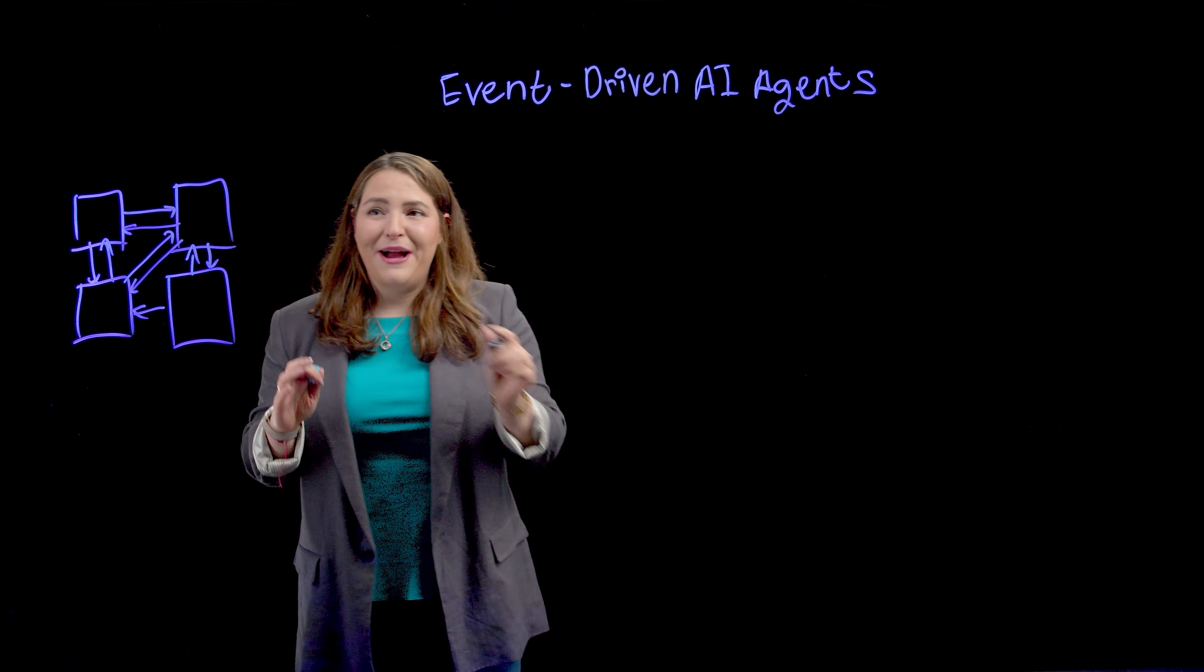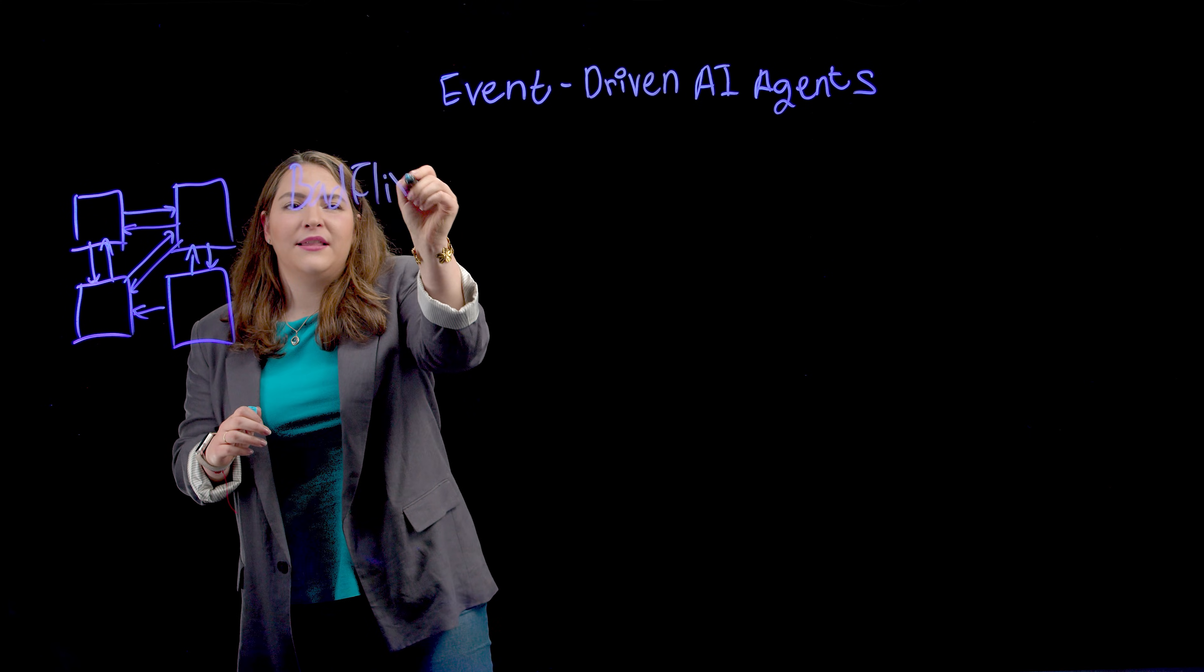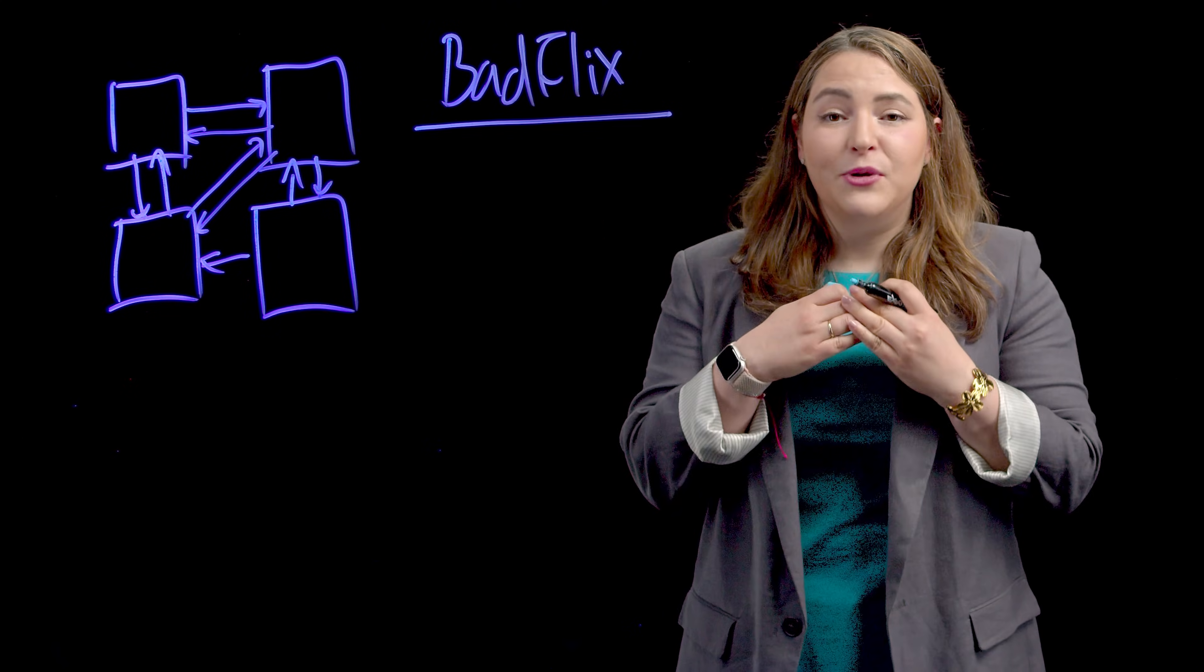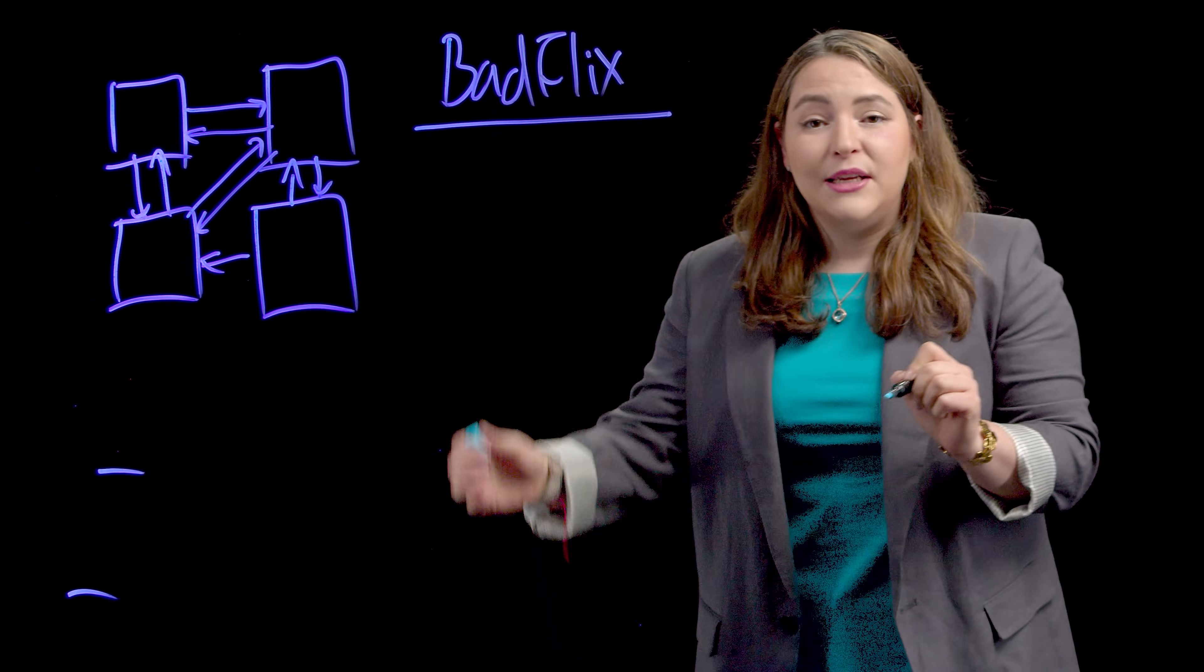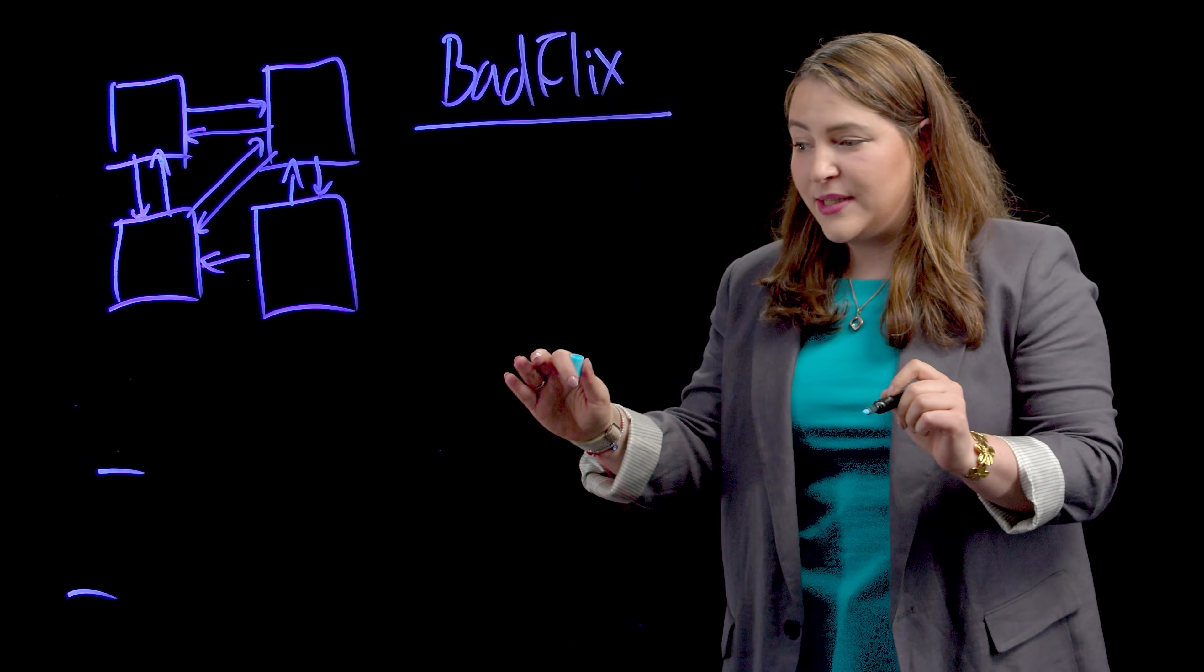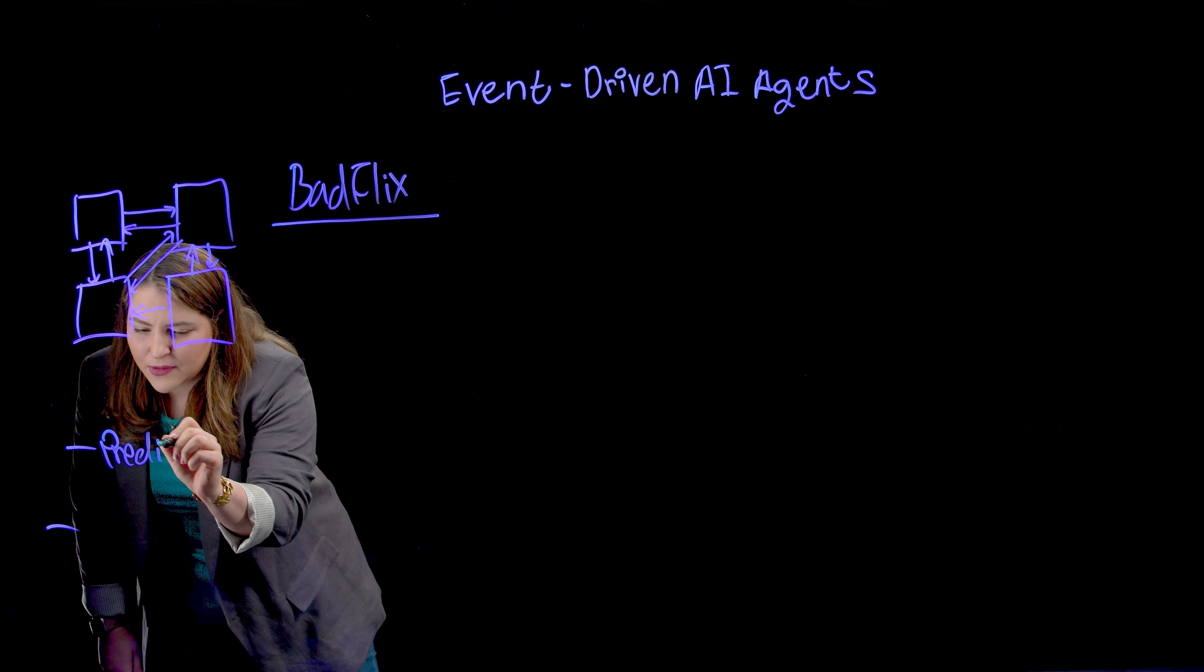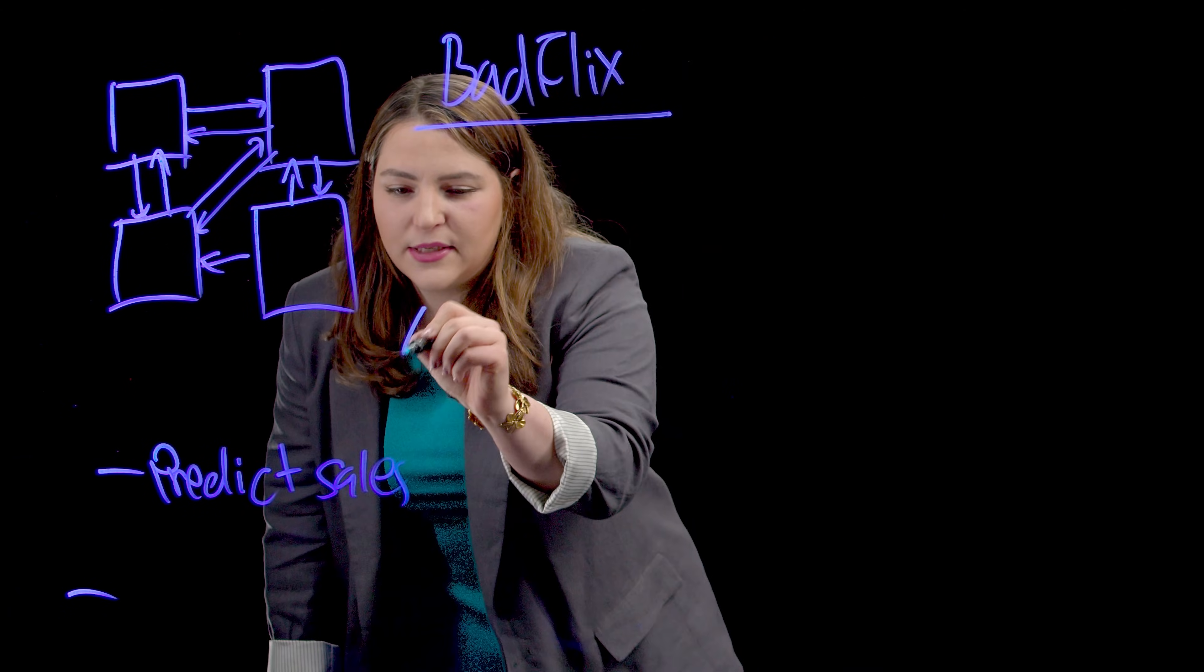Now, if this sounds complicated, let's take a look at an example so we can better understand what we're building. Let's assume we're working for Batflix. Batflix has movies that got the lowest rated score on the planet. We are responsible to build their agentic system. Here, we get different prompts in order to understand what's happening with our sales cycle. The first prompt is predict sales for the next three months. How do we take this prompt and transfer it into an actual answer?